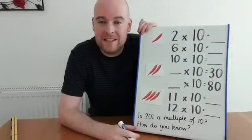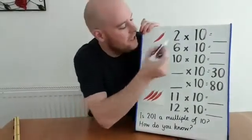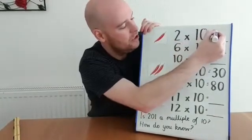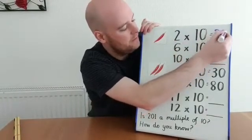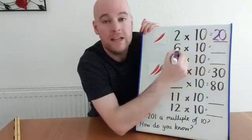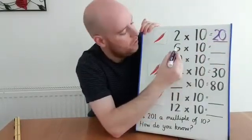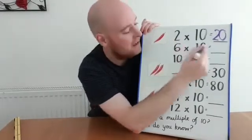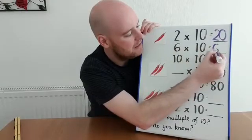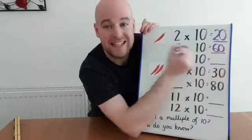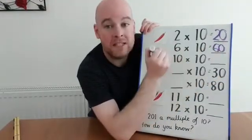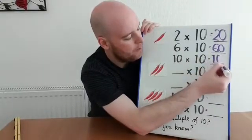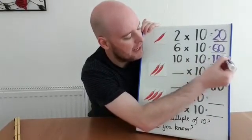Hi again. Are you ready to look at some answers? Let's do them together. Can you remember what 2 times 10 is? 20. 6 times 10? That's 60 — if 10 has 1 ten and I've got 6 lots of that, then it's going to be 6 tens and 0 ones, so 60. And then 10 times 10? That's 100. Well done if you remembered those when we did them on the counting stick.